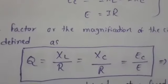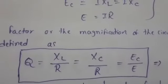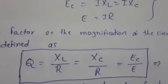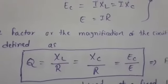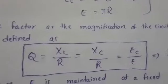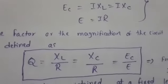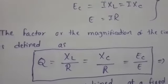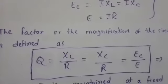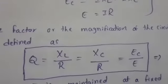The Q factor can be written as Q equals XL over R, which equals XC over R, which equals EC over E. From this equation, if we maintain a constant voltage E, we can find the voltage across the capacitor directly in terms of Q.